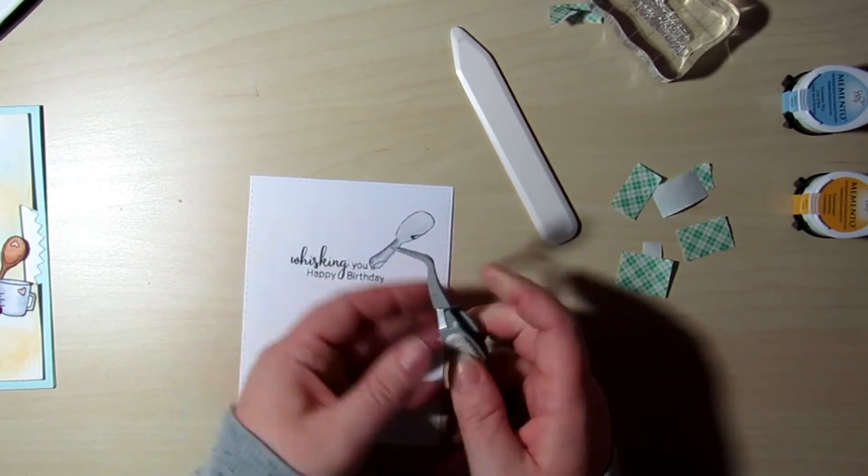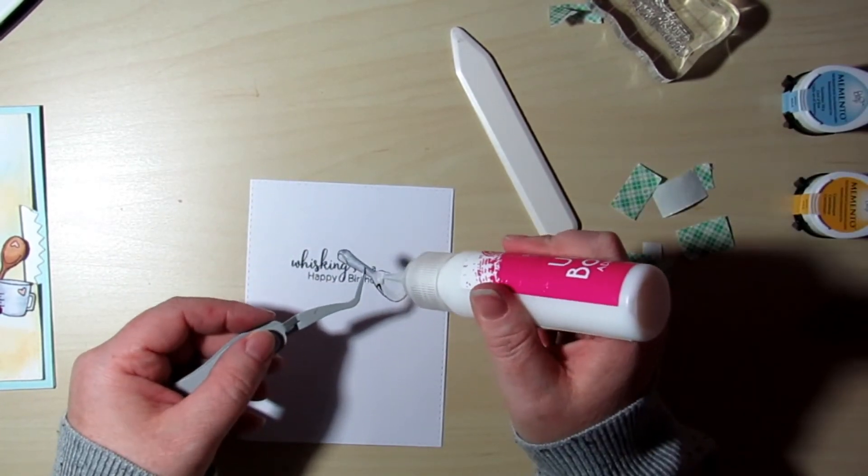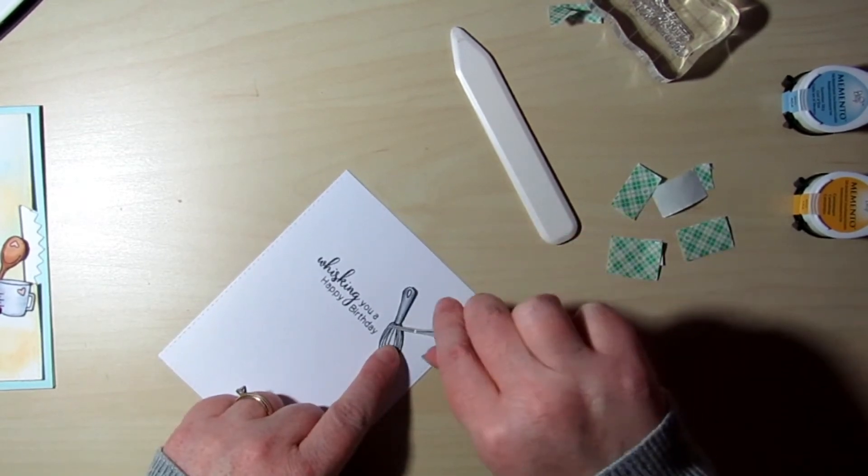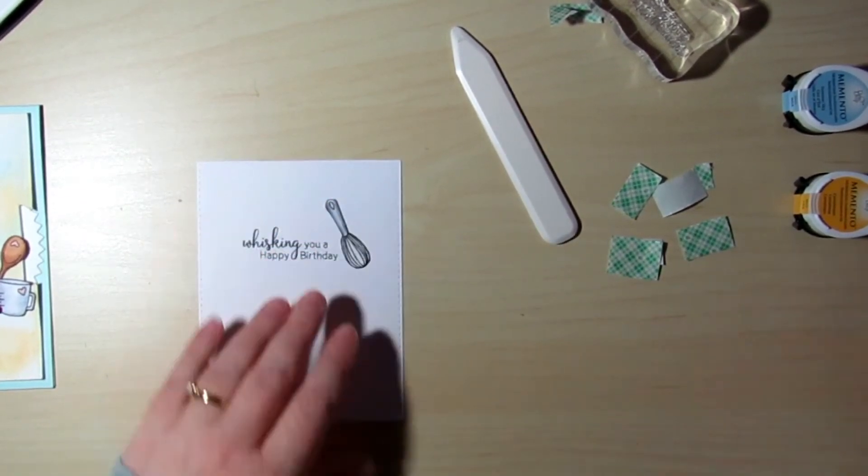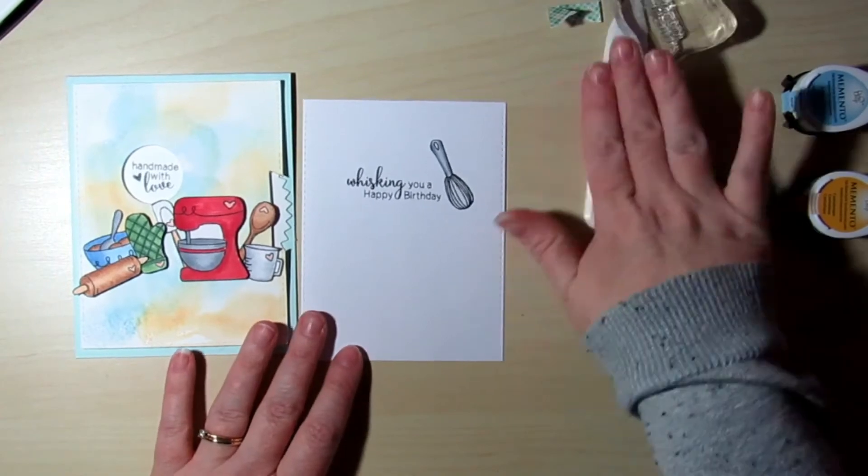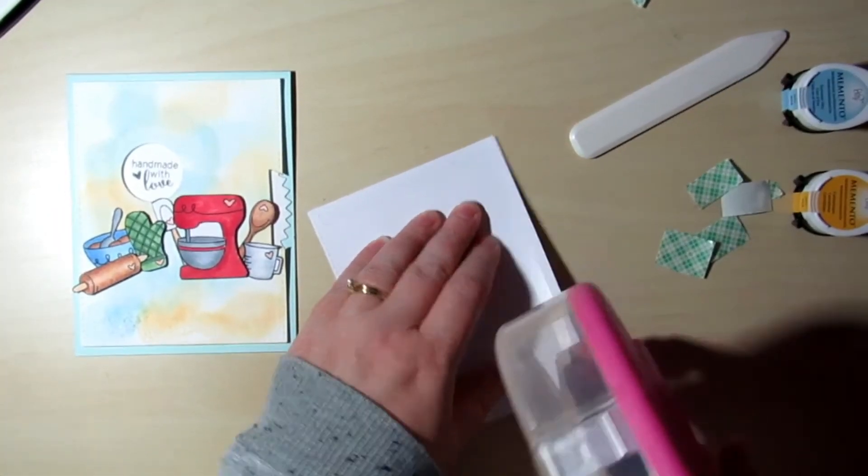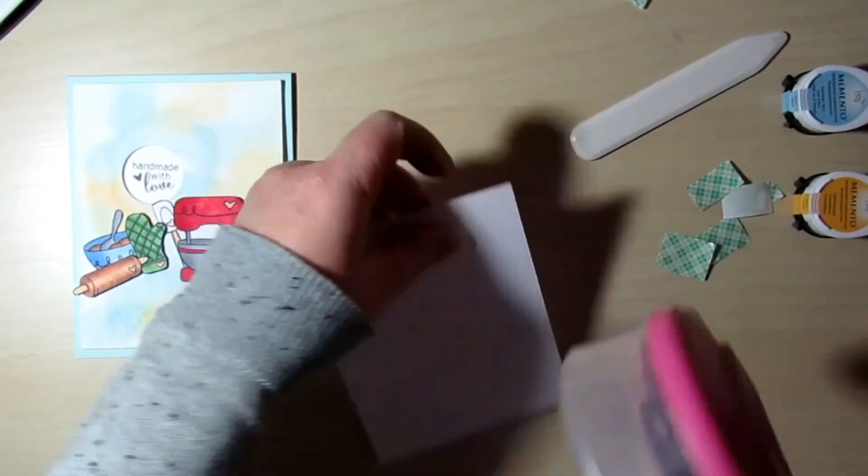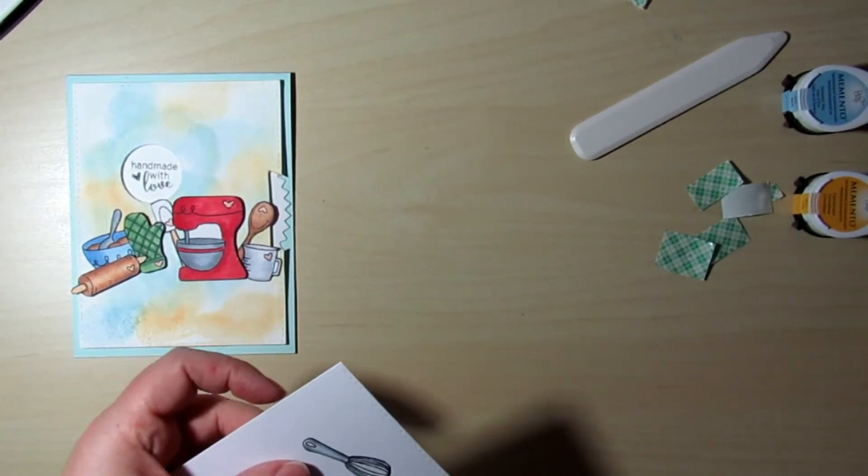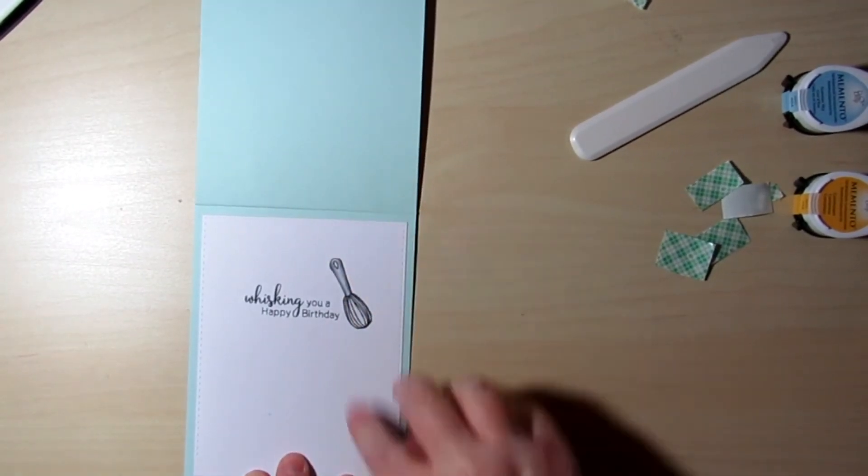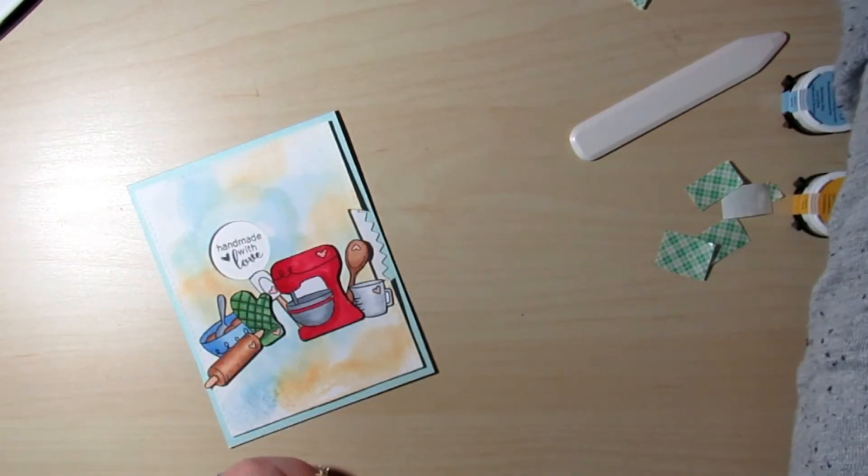This stamp set is so cute. I think the only two stamps I didn't use in this stamp set was the sentiment you spin me right round, which would have been cool if it would have fit in the little window, and then the other one was bake stir sprinkle mix. But I thought that this came out really, really cute. Let me know what you think in the comments below. This is my first time making this kind of card, and I was really pleased with how it came out.